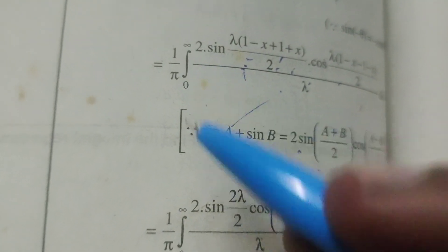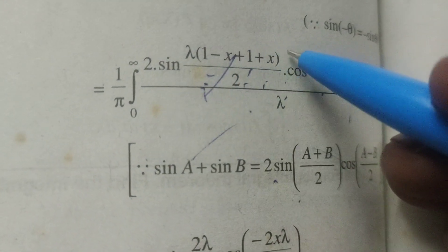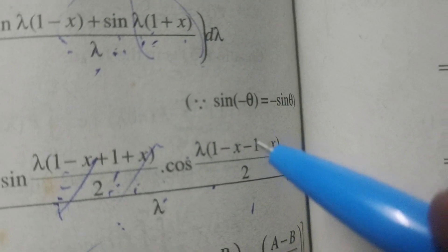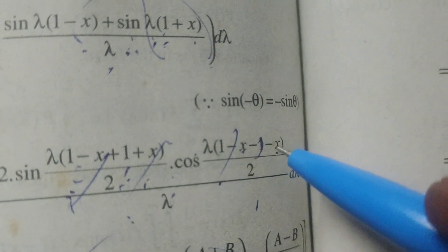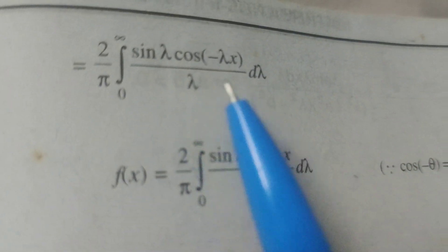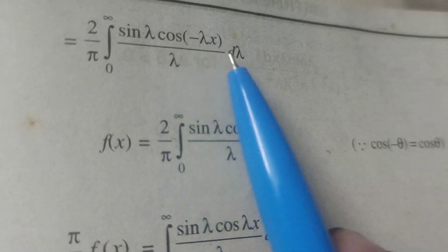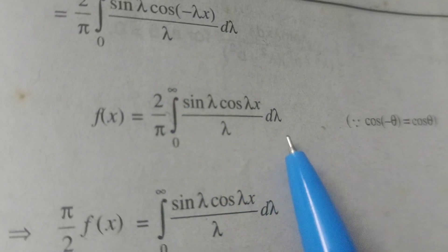Simplifying: since cos(−θ) = cos θ, cos(−λx) = cos(λx). Therefore f(x) equals (2/π) · integral from 0 to ∞ of (sin λ · cos λx) / λ dλ.